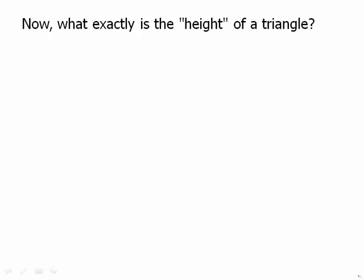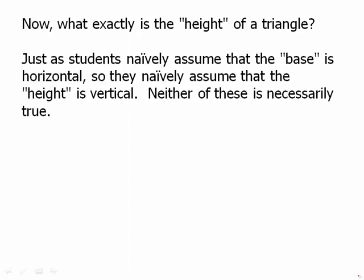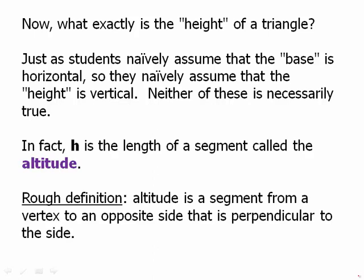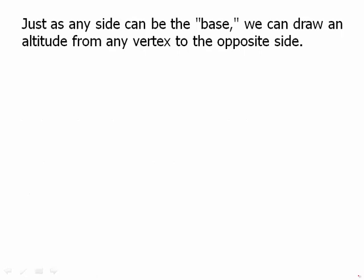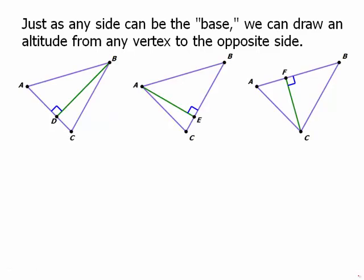What exactly is the height of a triangle? Just as students naively assume a base is horizontal, so they naively assume the height is vertical. Neither is necessarily true. H is the length of a segment called the altitude. The rough definition: an altitude is a segment from a vertex to the opposite side that is perpendicular to that side. Just as any side can be the base, we can draw an altitude from any vertex to the opposite side. Here is a triangle with three altitudes drawn.